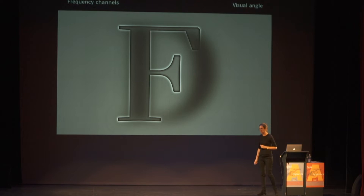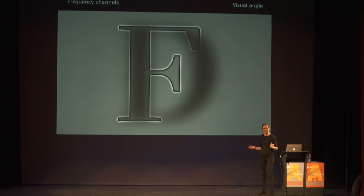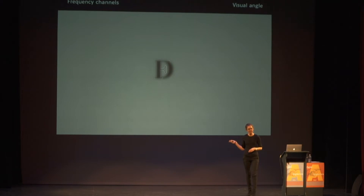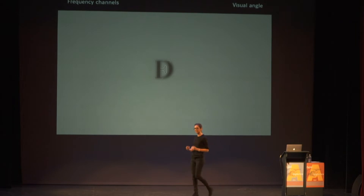I'd like you to take a look at this image. I'm guessing that most of you see an F now. This is related to frequency channels. So if I take down the F in size, you can better see the D now. These are low frequency channels, and that is what we use when we work with visual angles. For low frequency channels, we basically lose all the details of the letters, and what is left is the proportion and the weight. So these two things are very important for visual angles.